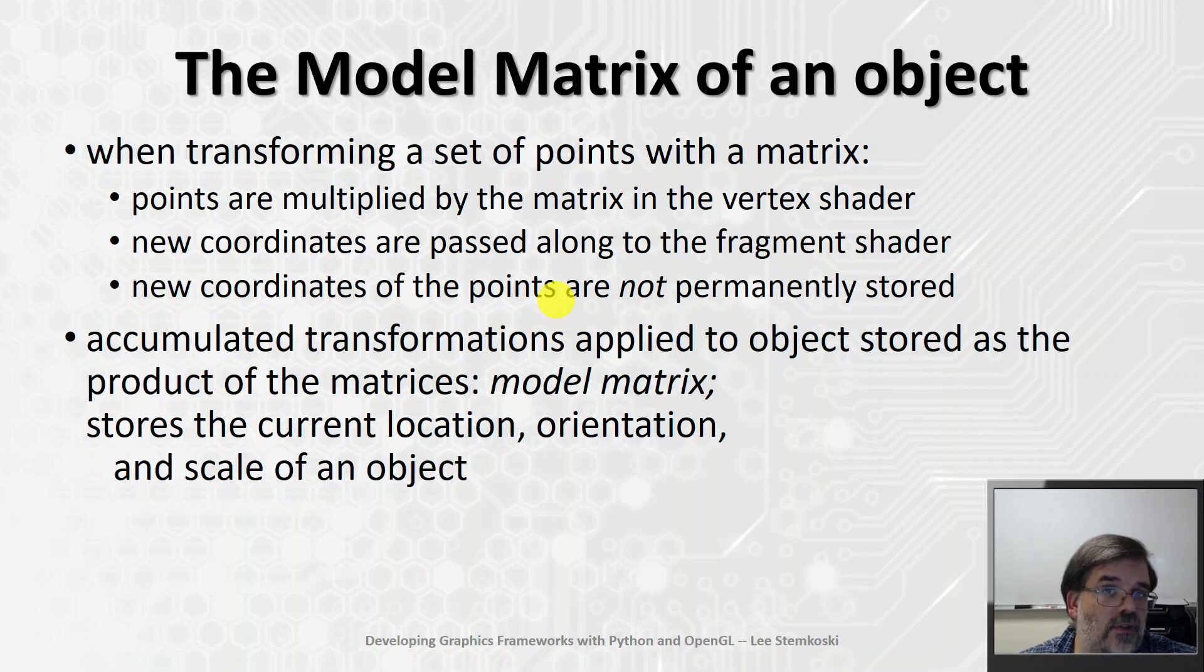But those new coordinates that are calculated are not permanently stored anywhere. The original coordinates, the original points defining an object, are stored in a vertex buffer, and we're not changing those original values. So how do we keep track of where an object is? How do we keep track of its location or orientation or size or scale? So the way this is done in computer graphics is instead of keeping track of the new points, we keep track of the accumulated transformations that have been applied to an object.